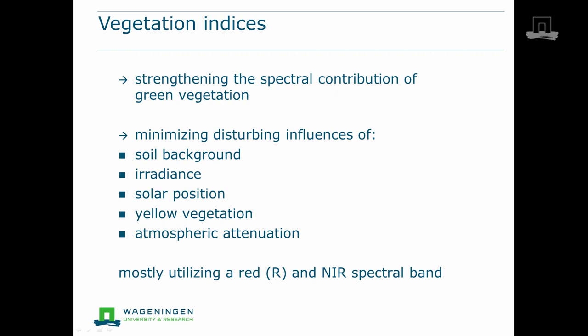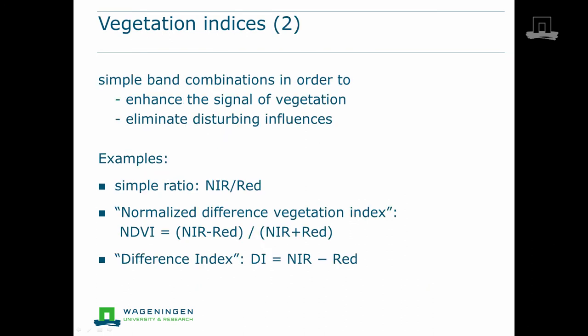Such vegetation indices mostly make use of red and near infrared wavelengths. Vegetation indices are simple combinations of two or more spectral bands that enhance the signal coming from vegetation and eliminate variations caused by disturbances.